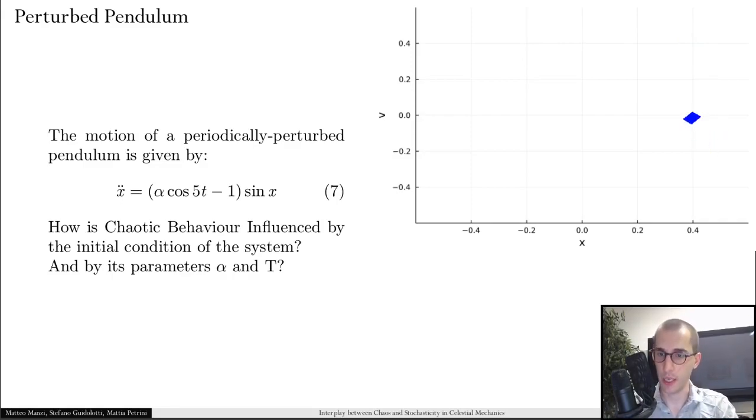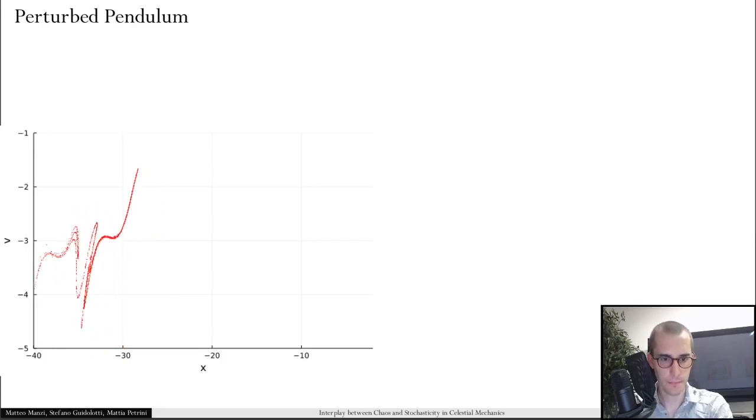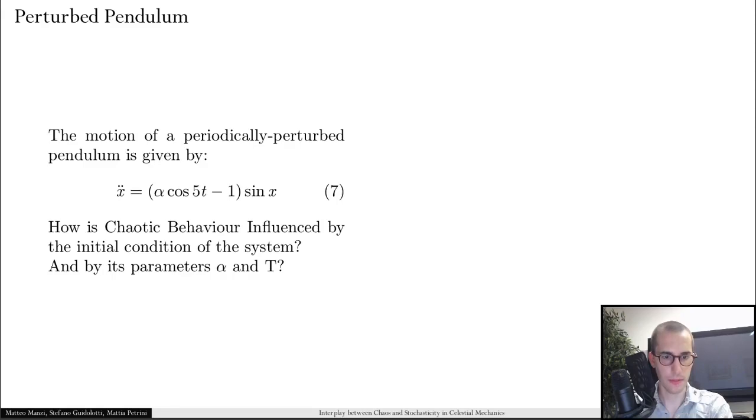This is not true for a chaotic initial condition. You see what happens for the same dynamical system, same parameters, but different initial conditions associated to a high chaos indicator value. You see that, again, there's this folding, repeated many times, that leads to really complicated structures, even for simple systems. And this is it about the perturbed pendulum.